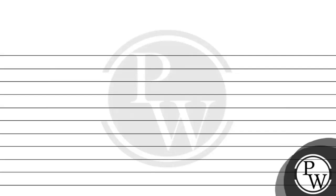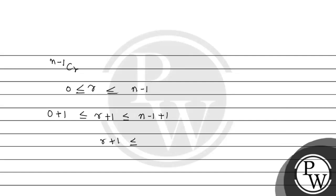Here we have n-1Cr. Since n-1 is coming, if we talk about the range of r, then r is greater than or equal to 0 but less than or equal to n-1. And we can also say that r+1 will be less than or equal to n, but greater than or equal to 1.